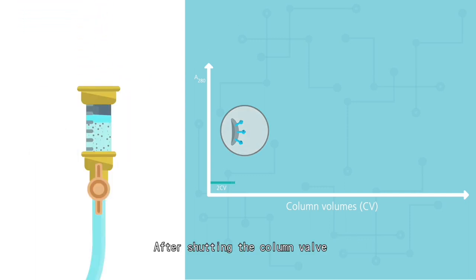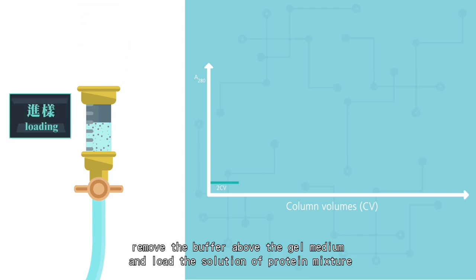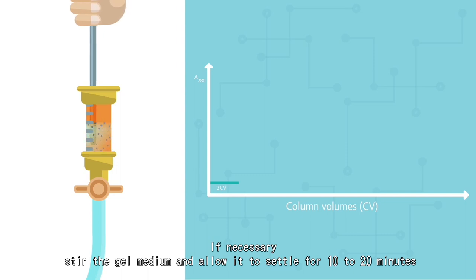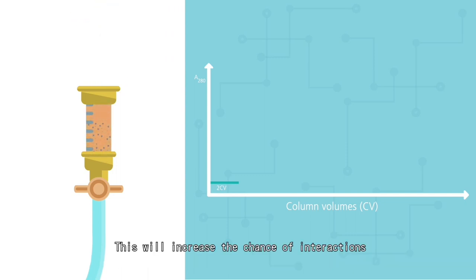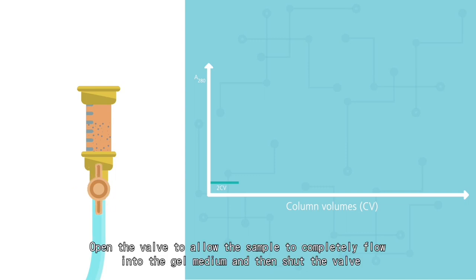After shutting the column valve, remove the buffer above the gel medium and load the solution of protein mixture. If necessary, stir the gel medium and allow it to settle for 10 to 20 minutes. This will increase the chance of interactions. Open the valve to allow the sample to completely flow into the gel medium and then shut the valve.